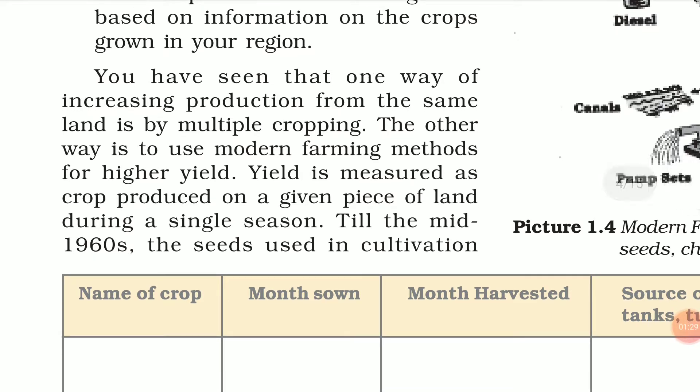The other way to increase production is to use modern farming methods for higher yield. Yield is measured as the crop produced on a given piece of land during a single season. We compare the yield from one season to the next — that measurement is what we call yield.